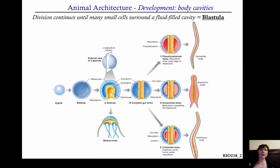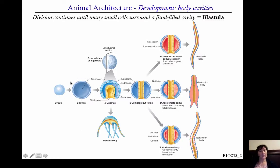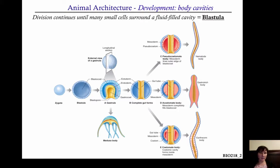Let's go a few steps further into development. Here's the zygote. The zygote undergoes many cleavage stages — it divides and divides and divides — until ultimately what you form is this hollow ball of cells called a blastula. In this diagram, they've split it right down the center, and it's a ball of cells indicated in blue with a fluid-filled center.